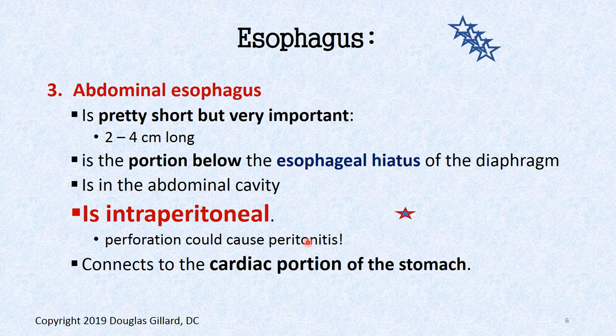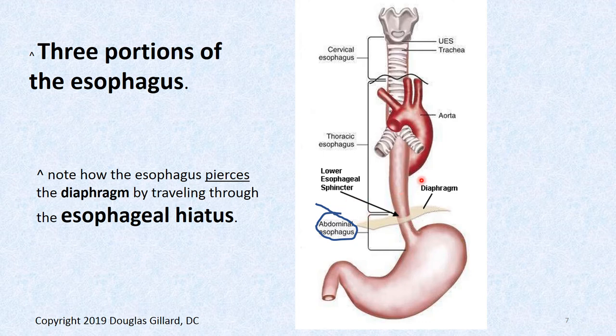The part I do talk about is the abdominal esophagus — a stubby little thing, about two to four centimeters long. It is found below the esophageal hiatus, and therefore it's in the abdominal cavity — intraperitoneal. So if you got an ulcer from chronic GERD or acid reflux, you could possibly get peritonitis from a perforation of the esophagus. That's a great board question. The esophageal hiatus is a hole in the diaphragm located at about T10, and it allows the esophagus to pass between the thoracic and abdominal cavities.